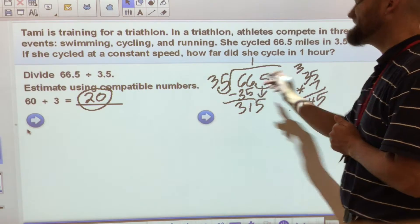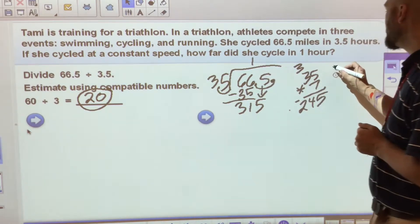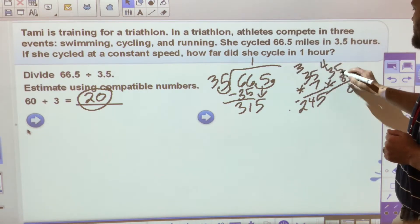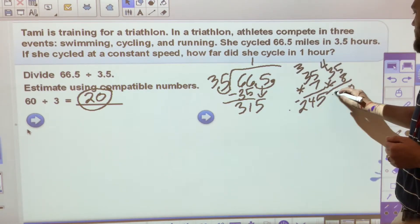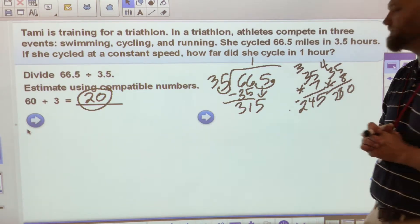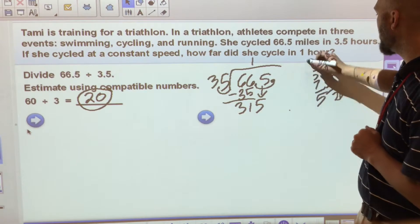So let's try 8. 35 times 8. 5 times 8 is 40. 3 times 8 is 24 plus 4 is 28. And I'm still a little bit low. So let's try 35 times 9.